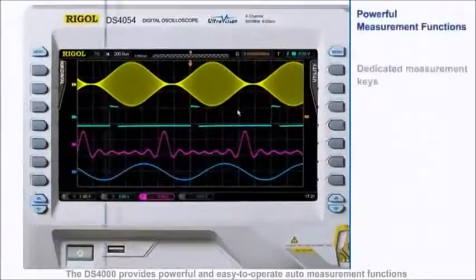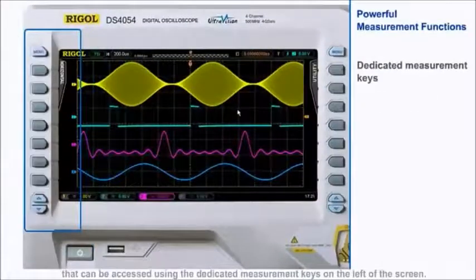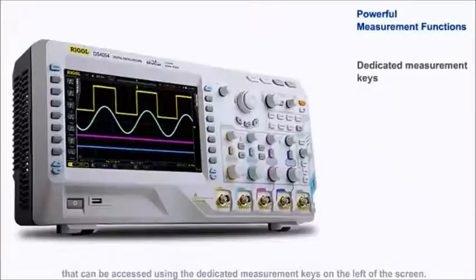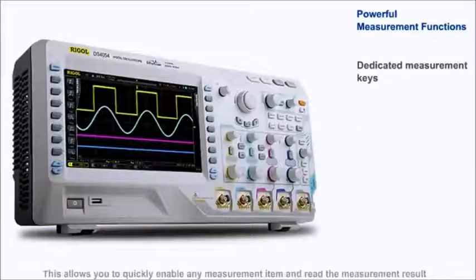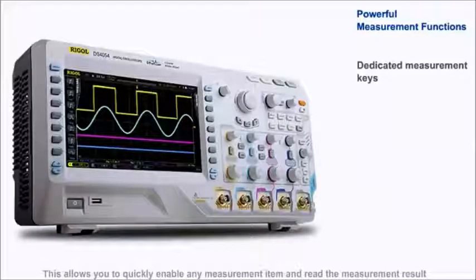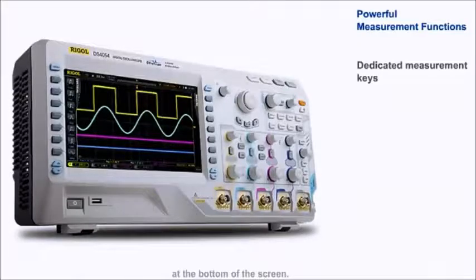The DS4000 provides powerful and easy-to-operate auto-measurement functions that can be accessed using the dedicated measurement keys on the left of the screen. This allows you to quickly enable any measurement item and read the measurement result at the bottom of the screen.